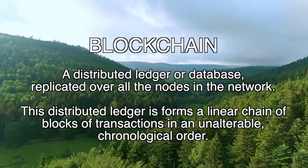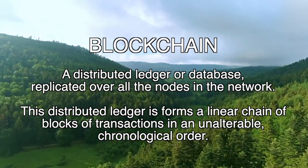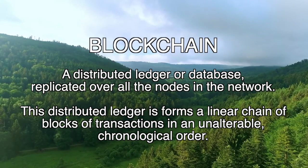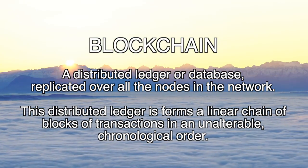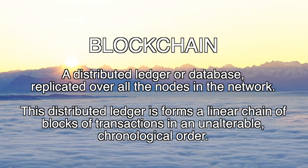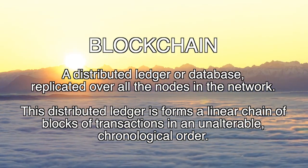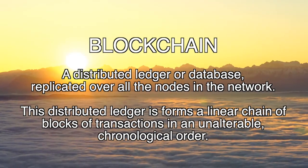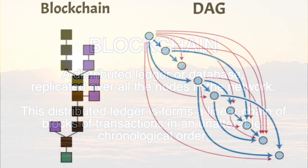Let's talk about structure. Blockchain is a distributed ledger, or a database, replicated over all nodes in the network. This distributed ledger forms a linear chain of blocks of transactions which you can't change or alter. Transactions are bundled into blocks to be validated, and validated blocks are added to the chain of previously validated blocks.